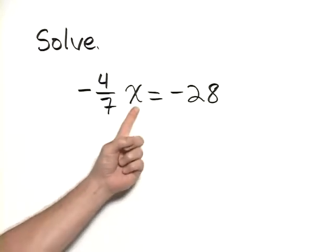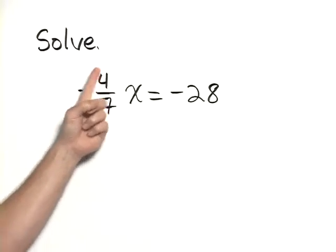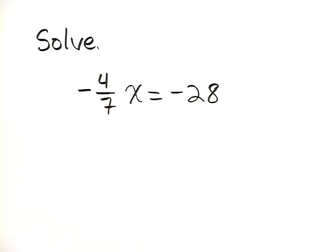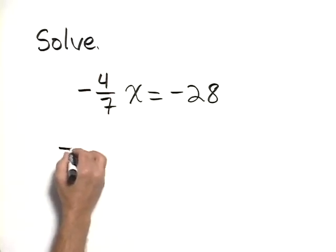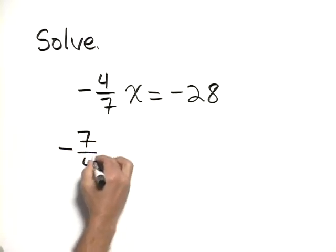To isolate x, we're going to multiply both sides by the reciprocal of negative 4 7ths, which is negative 7 fourths.